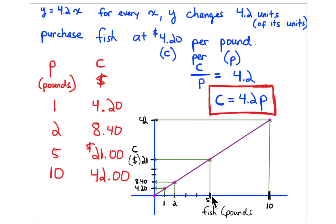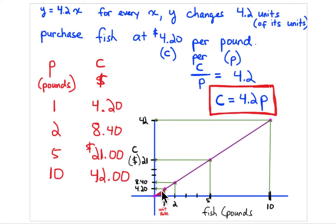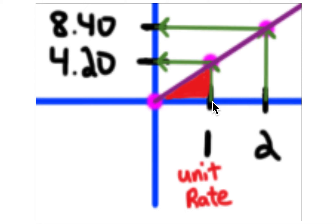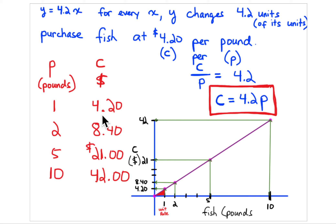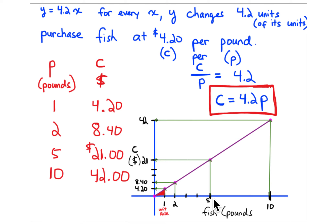The unit rate right here: for one pound of fish it costs $4.20. Double it — $8.40. Triple it — $12.60. Four times — $16.80. Five times — $21.00. The unit rate is the constant of proportionality — it's what you're always multiplying by, and it is also the slope. So for every x, y is 4.2 times that number. Five pounds times 4.2 gives you $21 — that's the number of units of cost, not the length of segments.